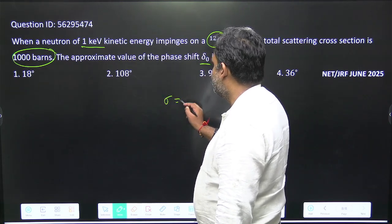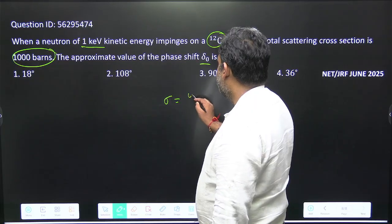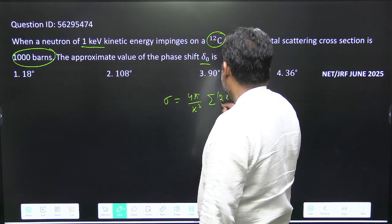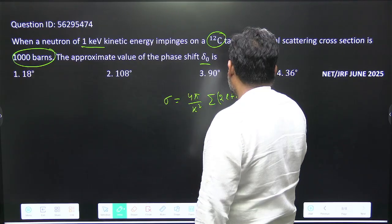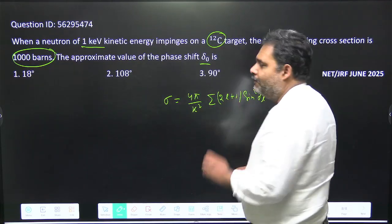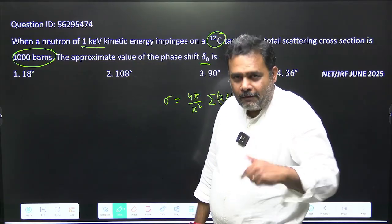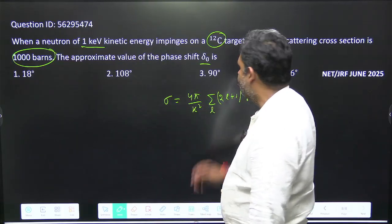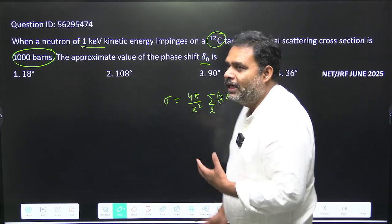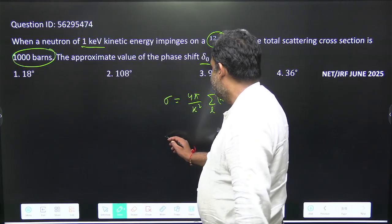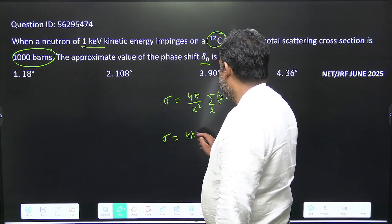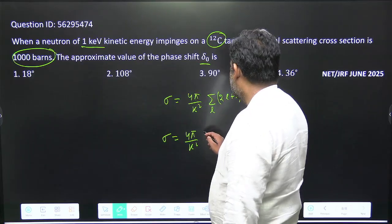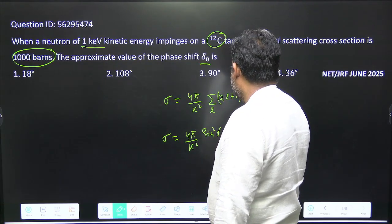We all know that the total scattering cross section is σ = (4π/k²) Σ(2L+1)sin²δₗ. Delta L is the phase associated to every wave and that is going to superimpose for different values of L. This is summation over L. But in this question we can assume that only S wave is excited. So we have σ = (4π/k²) and L = 0. So this value equals sin²δ₀.